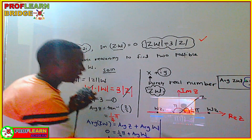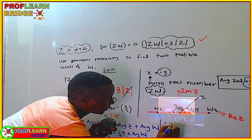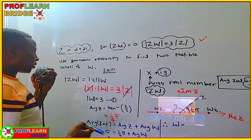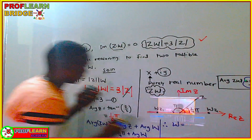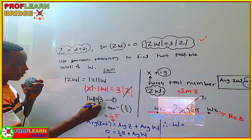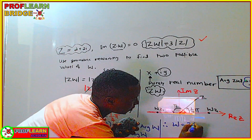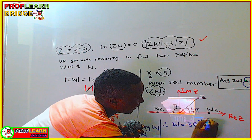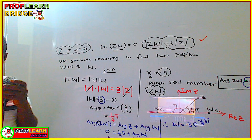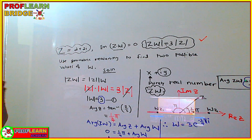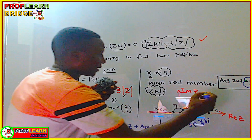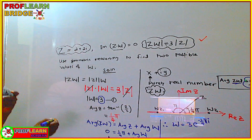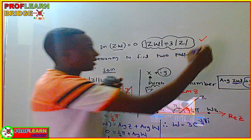From this we can write the first form of w in exponential form. The modulus of w is 3, and the argument is −π/4, so the first value is w = 3e^(−iπ/4). Now for the second case where arg(zw) = π.